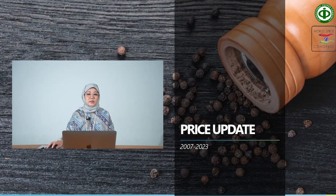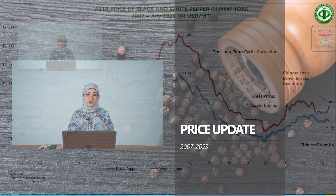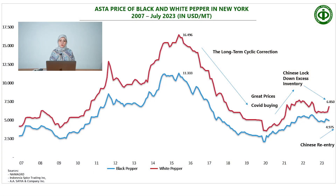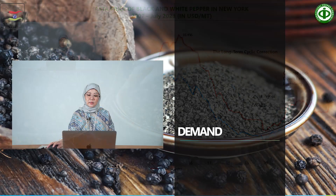On the price update from 2007 until 2023: looking at ASTA prices of black and white pepper in New York, from 2016 to 2019 you can see a long-term price correction, followed by COVID panic buying in 2020, and then Chinese lockdowns creating excess inventory. Starting from 2023 it is a Chinese re-entry into the market, so we hope prices will increase from here on. The highest prices for black pepper and white pepper were in 2015-2016.